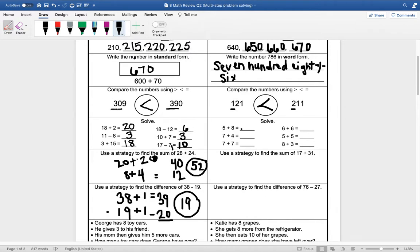All right, we're going to solve these addition problems. 5 plus 8 is 13. 7 plus 4 is 11. 7 plus 7 is 14. 6 plus 6 is 12. 5 plus 5 is 10, and 8 plus 3 is 11.